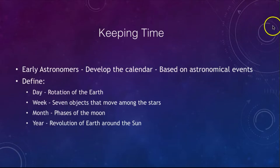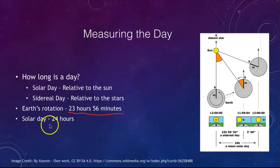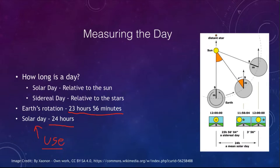How do we measure a day? There are actually several different measurements. The Earth's rotation is 23 hours and 56 minutes — a little less than 24 hours to spin once. But the solar day is 24 hours, and that is what we use.